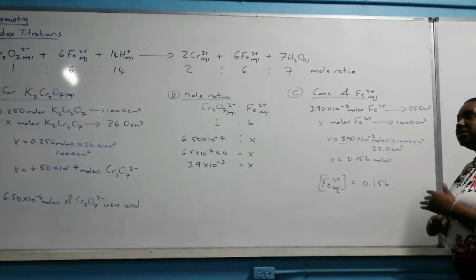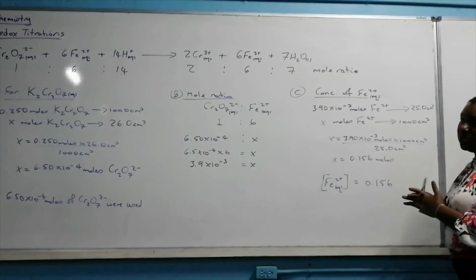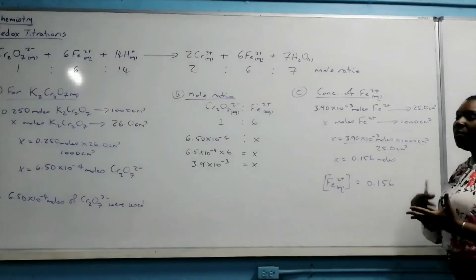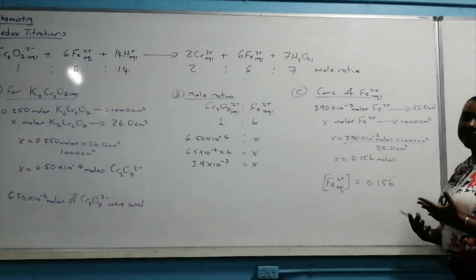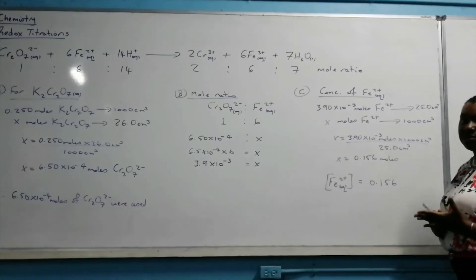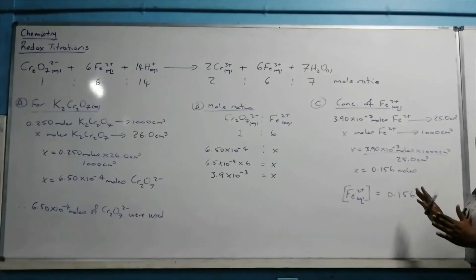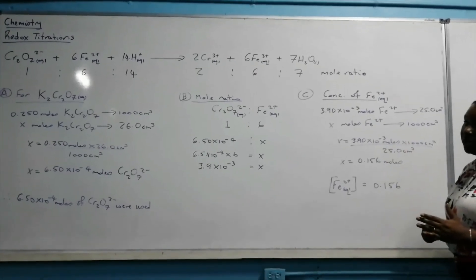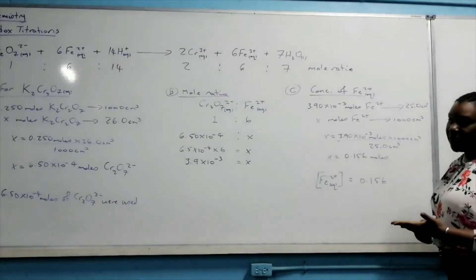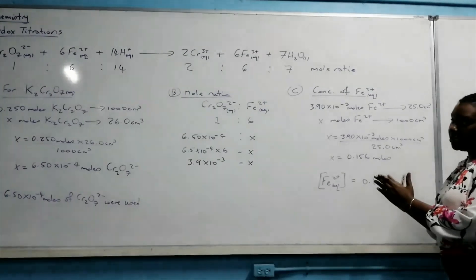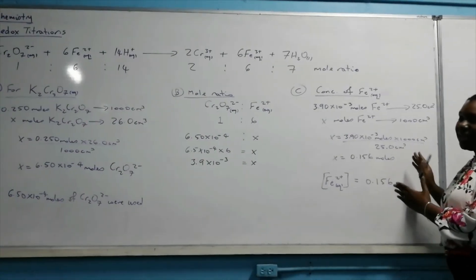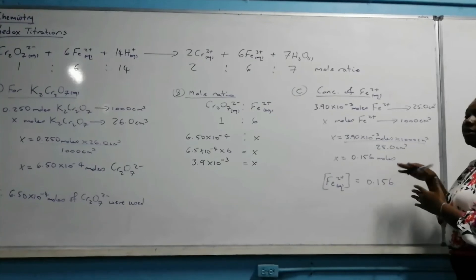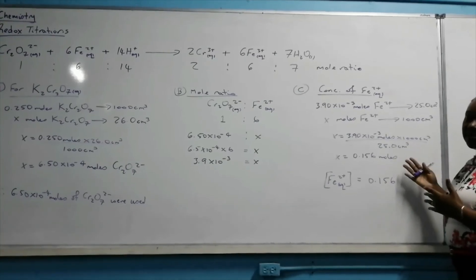This is how we generally approach redox-based titrations — it's very similar to how you work with acid-base titrations. You always use the standard solution to find the number of moles used, then use the mole ratio to find the number of moles of the analyte, and then calculate that value for 1 dm³.